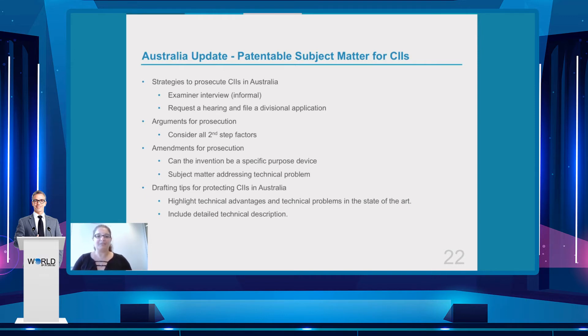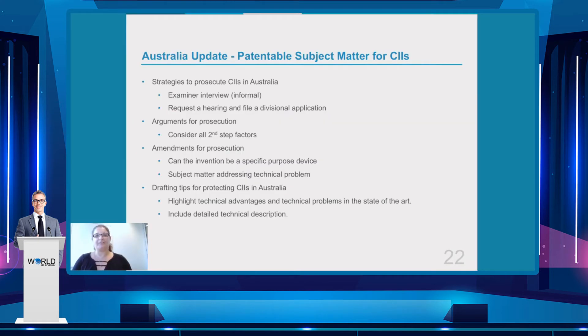In terms of amendments, there are several options. Firstly, can the invention be amended to relate to a specific purpose device? If so, then the Aristocrat 2020 decision can be used — though this may change when the appeal is handed down. We can also look at subject matter that highlights that the claimed invention addresses a technical problem or its technical nature. In terms of drafting, it is becoming increasingly important to highlight technical advantages and technical problems in the art in the specification, and to include a detailed technical description. Failure to do either may make it more difficult to satisfy the examiner that the claimed invention provides a technical contribution. As we have seen in Encompass, it is dangerous to allow an opinion that a person skilled in the art is left to decide the implementation details.